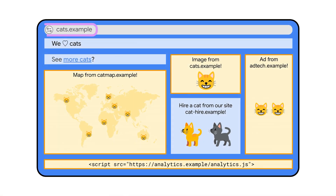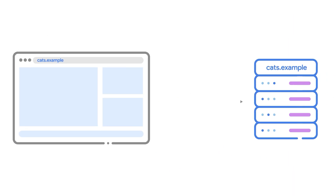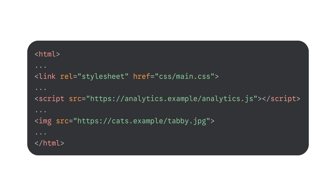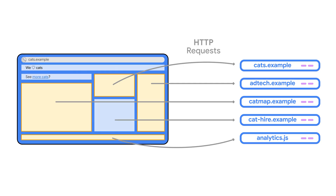Imagine you visit the website cats.example and your browser makes a request to cats.example. By default, the cats.example server responds with the HTML file at the top level of the site: cats.example/index.html. Your browser parses the HTML code, which includes CSS, JavaScript, and images, and parsing the HTML triggers your browser to send additional HTTP requests for all the resources on the page — from cats.example and from other sites, like a cat image from cats.example or a map from catmap.example.